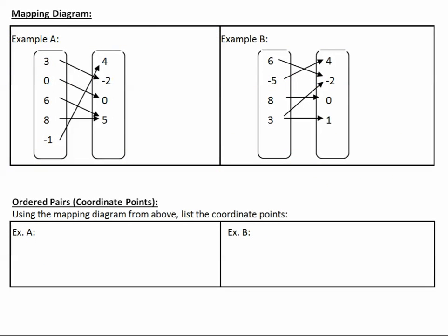Let's begin by looking at a mapping diagram. This shows us the x values and what y values they are mapped to — the domain values and the range values. Here, x is for the domain and y is for the range. What we see in example A is a function: three goes only to negative two, zero goes only to zero, six goes only to five, eight goes only to five, and negative one goes only to four. There's exactly one y value with each x value.